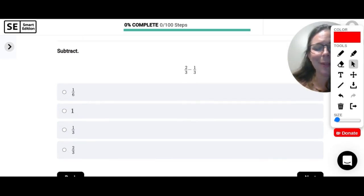Let's subtract. Two thirds minus one third. Oh, we finally have common denominators given to us. So all we have to do is just subtract the top and keep the bottom. Two thirds minus one third is one third.